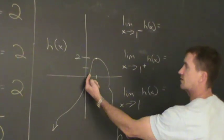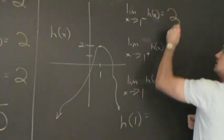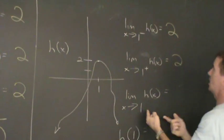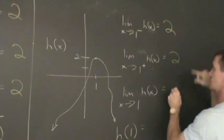So, the limit as x approaches one from the left side, two. The limit as x approaches one from the right side, two. The limit as x approaches one, well, these are the same, so this is two.